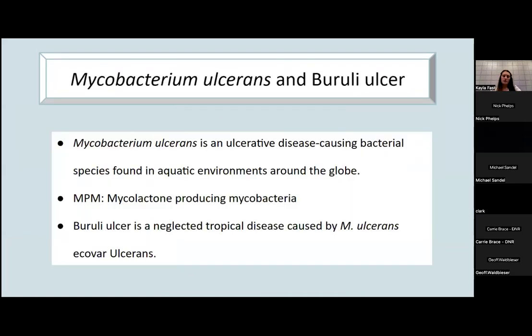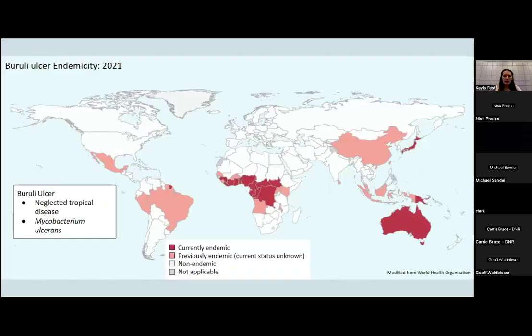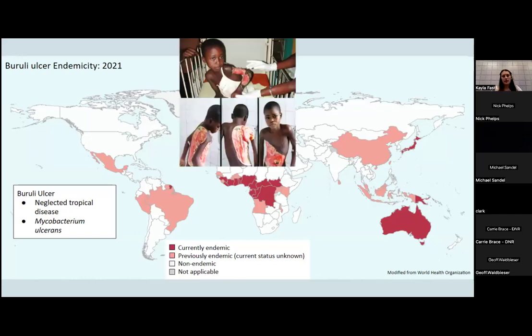Just to reiterate what Kayla said earlier about mycobacterium ulcerans, it is an ulcerative disease causing bacterial species found in aquatic environments around the globe. NPM stands for mycolactone-producing mycobacteria, and buruli ulcer is a neglected tropical disease caused by mycobacterium ulcerans ecovar ulcerans. Here again is that map of endemic areas and what buruli ulcer looks like.